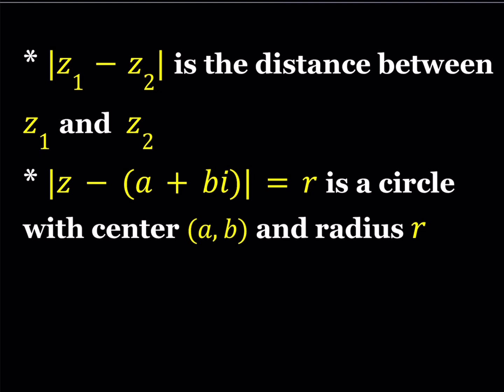Using that distance definition, what happens if the distance between z and a plus bi becomes a constant? Then you're talking about a circle whose center is at (a, b), because (a, b) is a fixed point and z is arbitrary — the set of points equidistant from (a, b). What if it's less than or equal to? Then you're also talking about the inside of the circle.